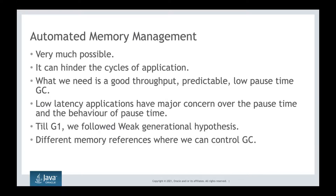We also discussed how different memory references let you control the garbage collector — weak references, phantom references, and soft references. We saw scenarios where objects should not follow perfect GC analysis, so you can define when the garbage collector should or should not collect an object. We examined what happens when you explicitly create a weak reference or phantom reference and how the GC behaves with those.